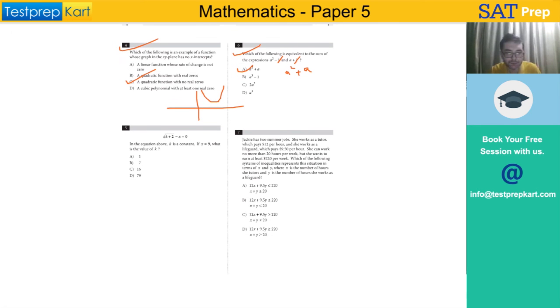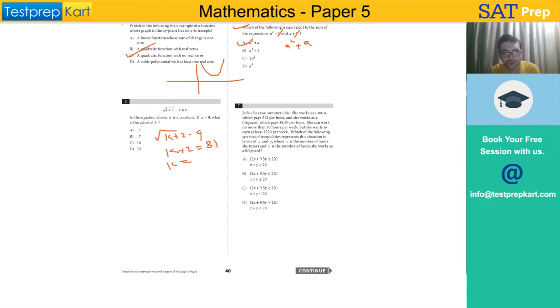In the equation, x is a constant. If x = 9, what is the value of k? I can write √(k + 2) = 9, so k + 2 = 81. Therefore k = 79.